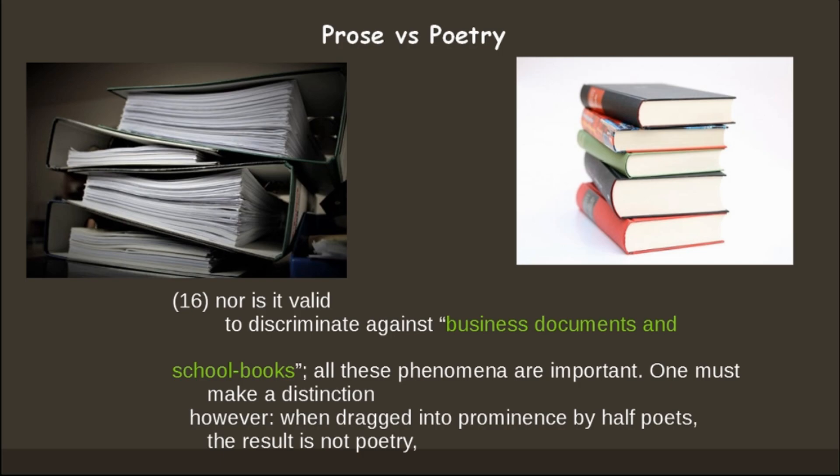There is definitely a distinction between prose and poetry. In line 16 she says 'nor is it valid to discriminate against business documents and school books.' She does not mean to say that only poetry is important in life — there are other things like business documents and school books that are important too. This reference is taken from Leo Tolstoy, who writes in his diary that 'poetry is verse, poor prose is not verse, or else poetry is everything with the exception of business documents and school books.' Everything else is also relevant in life, and that's what Moore is trying to say.